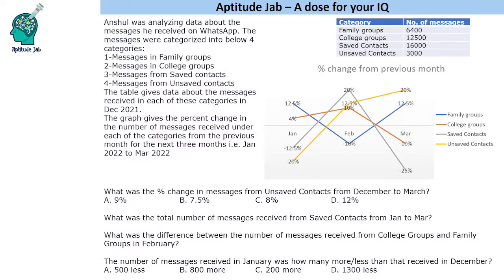Hello everyone, welcome to Aptitude Lab. This is a set involving a line graph and a table. Anshul was analyzing data about messages he received on WhatsApp. The messages are of four categories: messages in family groups, messages in college groups, messages from saved contacts, and unsaved contacts. The table gives the number of messages received in December 2021, and the graph gives the percentage change in the number of messages in these four categories.